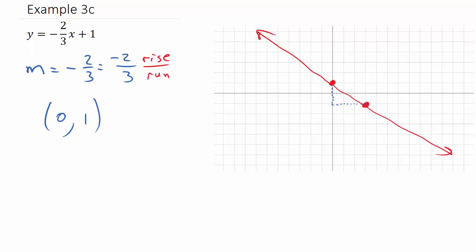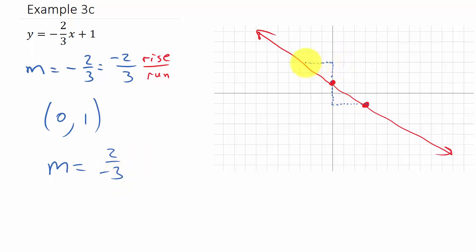Now, let's suppose that instead of negative 2 over 3 for the slope, we wrote 2 over negative 3. From my y-intercept, if I go up 2 units and my run is negative 3, that means I go to the left 3 units — there's my other point. You see, it makes no difference. If you put the negative in the numerator it'll be on one side of the y-intercept; if you put it in the denominator, it'll be on the other side. But you'll get the same graph.